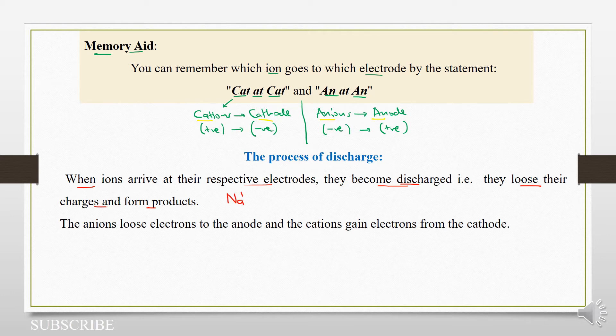That means our sodium will go to our cathode, which is negatively charged. But at the negative electrode, which is the cathode, we have very many electrons. That's why it's negatively charged.